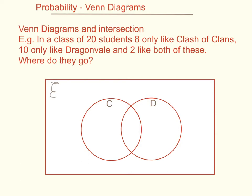So where do you put them? This big box here is the sample space. It has a special symbol — the universal set symbol — which means that everything has to be inside the box; you can't have anything outside. In the class of 20 students, all students go inside this big sample space, and where they are depends on what they like.